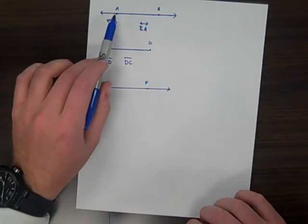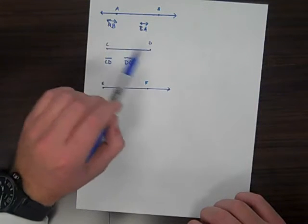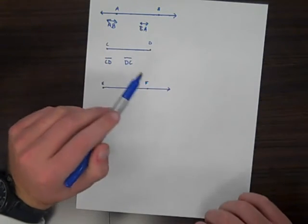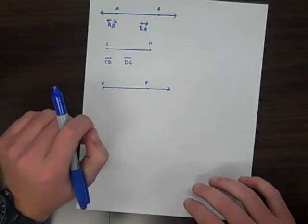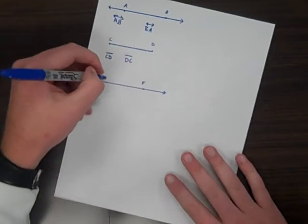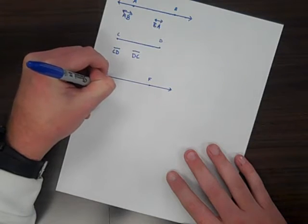So again, lines go forever in both directions. Line segments start at one point and stop at the other. And rays start at one point and continue through to the other. Now, similar to lines and line segments, rays can also be signified with a smaller name. This here will be ray EF.